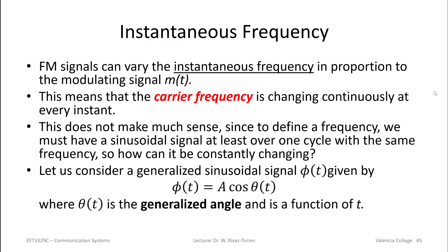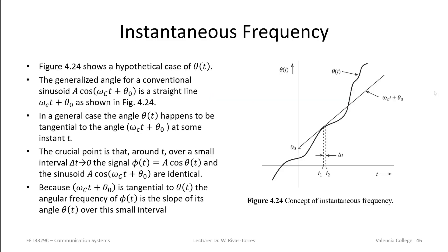Let us start by generalizing what a sinusoidal signal really is. We have a signal φ(t) equal to amplitude A times the cosine of some phase, and this θ(t) is what we call the generalized angle, which is a function of time. To understand instantaneous frequency, let's look at what a generalized phase β(t) would look like. On this graph, the dark wavy line is our generalized phase.